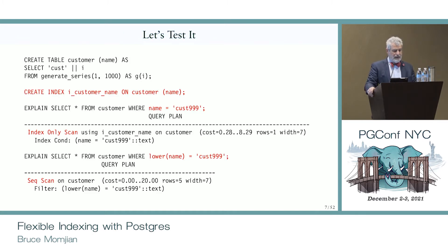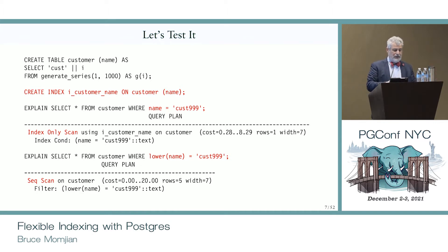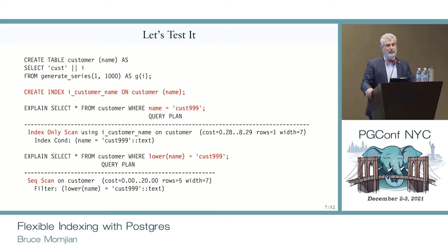What's great is that you can actually index the output of the function on the column. Then anywhere you use that function on that column, the index will be used. Regarding a question about views: the way the query processor works is we parse the input, tokenize it, and run it through the rewriter where views and rules are handled. So whatever view you referenced is automatically replaced by the view definition, and that output goes to the optimizer. The optimizer really sees the combined output of actual columns and functions — it's identical to typing it out manually.